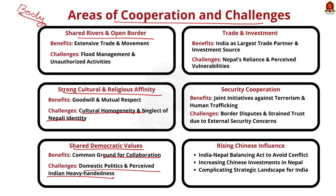Fourthly, India is Nepal's largest trade partner and a crucial source of investment and tourism, but Nepal's reliance on India for transit and trade due to its landlocked geography creates perceived vulnerability. Fifthly, both India and Nepal are doing joint initiatives to address concerns like terrorism and human trafficking, but border disputes and India's external security arrangements sometimes strain trust. Sixthly, regarding Chinese influence in Nepal: India and Nepal strive to maintain balance and avoid conflict, however increasing Chinese investment in Nepal provides Kathmandu with an alternative to its traditional reliance on New Delhi, complicating the strategic landscape.